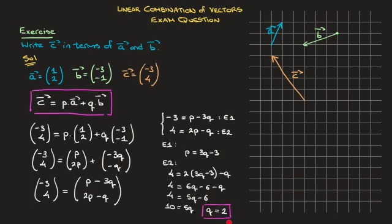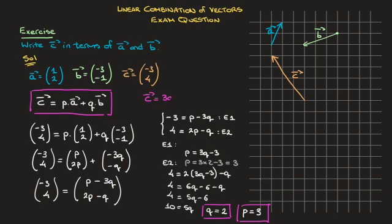Now that we know the value of Q, we go back to the expression we had for P and replace Q with 2. In doing so, we find P = 3(2) - 3. Since 3 times 2 minus 3 equals 6 minus 3, we can state that P equals 3. These two results allow us to go back to the linear combination we wrote and state that C equals 3 times vector A plus 2 times vector B. And that's the final answer.